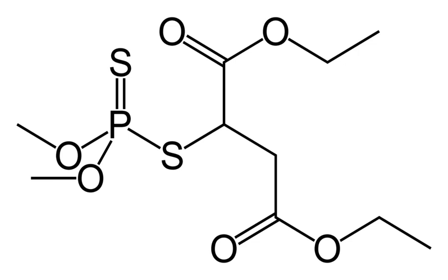It is produced by the addition of dimethyl-dithiophosphoric acid to diethyl maleate. The compound is chiral but is used as a racemate.